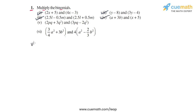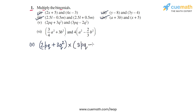Now we come to part 5, where we have to multiply 2Pq plus 3Q squared — the first binomial — with 3Pq minus 2Q squared, the second binomial. We apply the distributive law, multiplying 2Pq with the bracket 3Pq minus 2Q squared, and then 3Q squared with the same bracket.